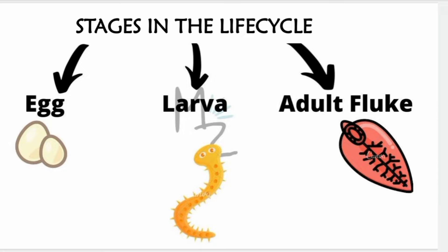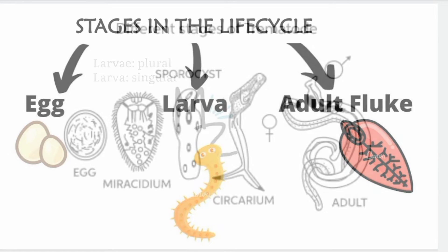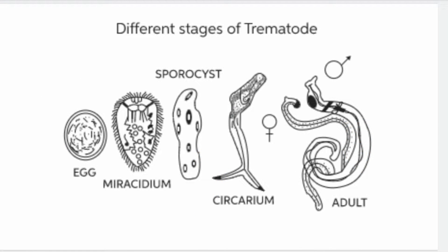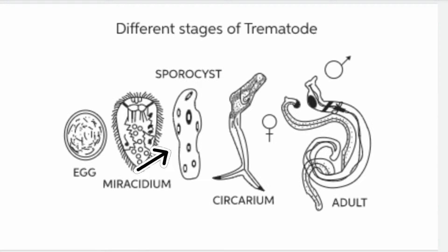The stages in the life cycle of a trematode are: first, the egg; then the larvae, which has several stages; and third, the adult fluke. The larval stages are: miracidium, sporocyst, and cercaria. The adult fluke has both male and female genders in one body — that is why it is termed a hermaphroditic adult fluke.